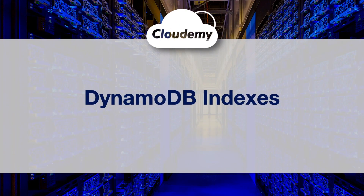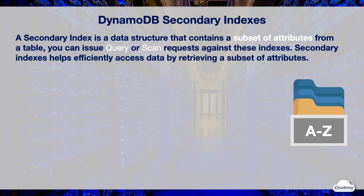Hey guys, welcome back. I'm Jay. In this episode, we're going to look at secondary indexes of DynamoDB. A secondary index is a data structure that contains a subset of attributes from a table. DynamoDB allows you to create one or more secondary indexes so you can efficiently access data by retrieving only a small subset of attributes. You can issue query or scan requests against these indexes.